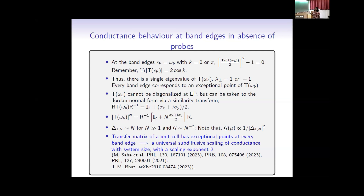The eigenvalues of the transfer matrix are calculated from its trace. For the nearest-neighbor model, the trace equals 2 cos(k), giving the band dispersion relation. At the extremum of the band dispersion — the band edges — the two eigenvalues of the transfer matrix coalesce, and the corresponding eigenvectors also coalesce. This is the exceptional point degeneracy of the transfer matrix at the band edges. This gives the determinant of the tridiagonal matrix proportional to N, and in turn conductance scales as 1/N². So there is a universal sub-diffusive scaling with exponent 2 at the band edges.